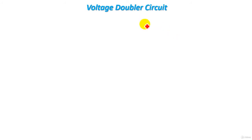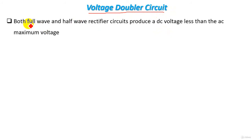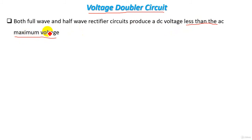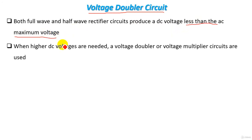Hello everyone. In this tutorial we will understand another circuit for producing high voltage DC. This circuit is the voltage doubler circuit. First of all, both full wave and half wave rectifier circuits produce a DC voltage, but this DC voltage is less than the AC maximum voltage. For the best case it will be equal to the maximum AC voltage, which is the secondary voltage of our high voltage transformer. When higher DC voltages are needed, a voltage doubler or voltage multiplier circuit is used.